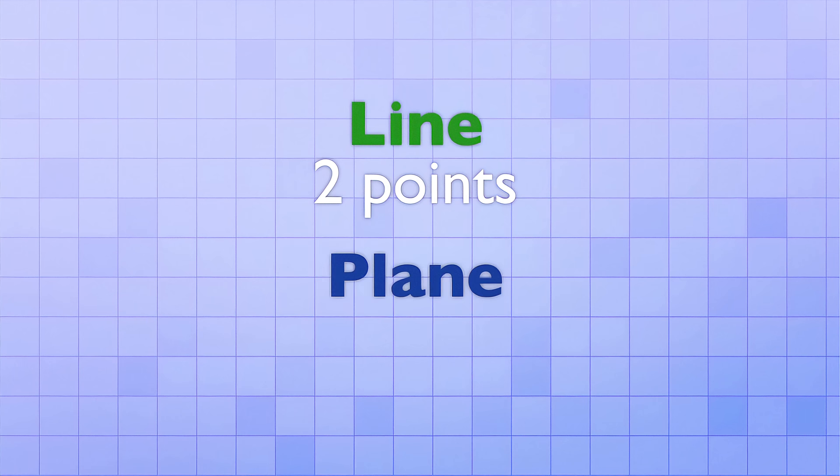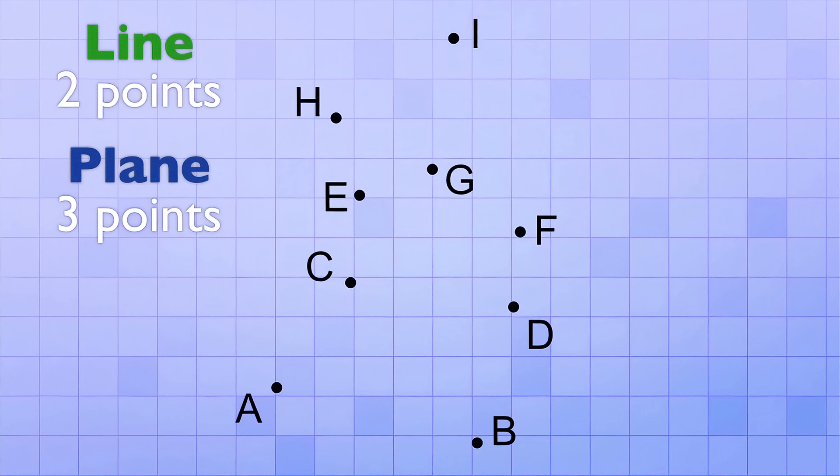Earlier in the video, we learned that you can make a line by connecting any two points, right? Well, in order to make a plane, it turns out that you need to have three points. Like our three points A, B, and C. If you just connect A and B, you get a line. But if you connect A, B, and C, you get a triangle.